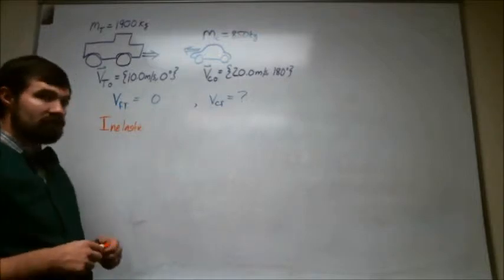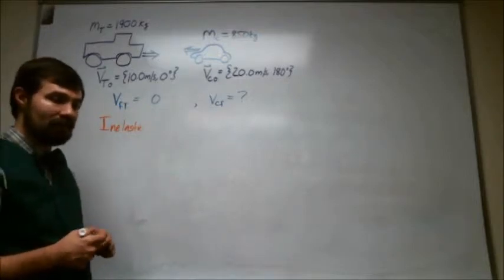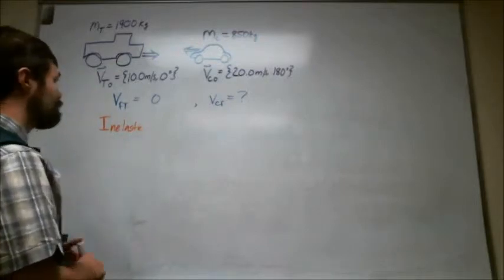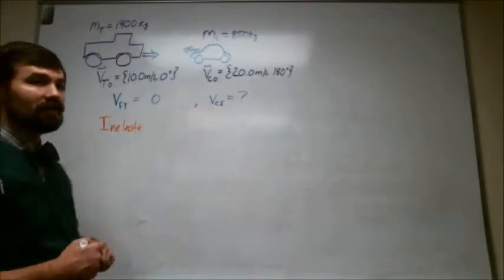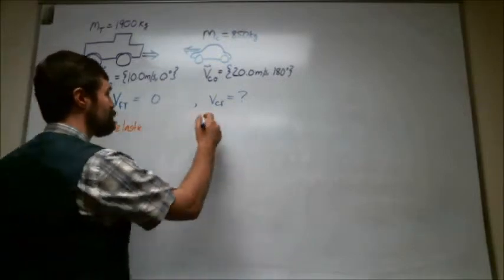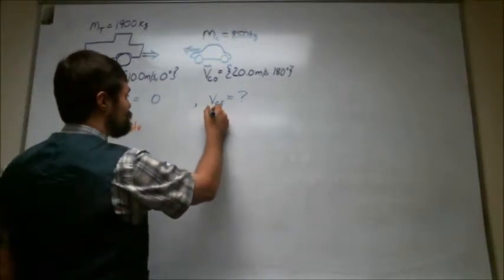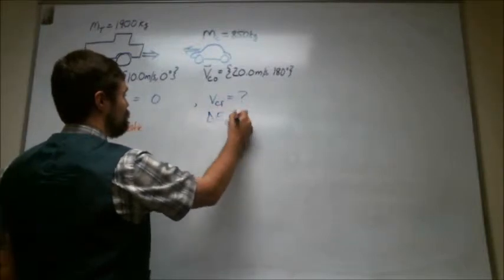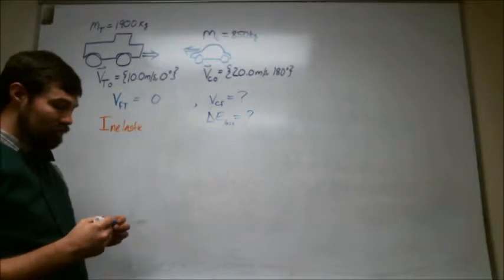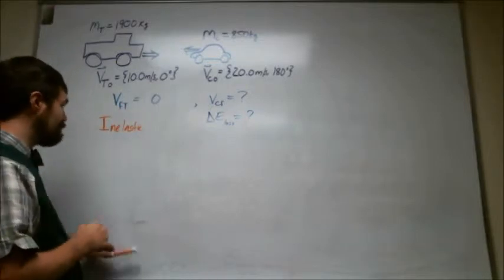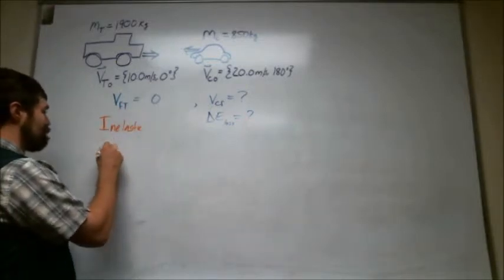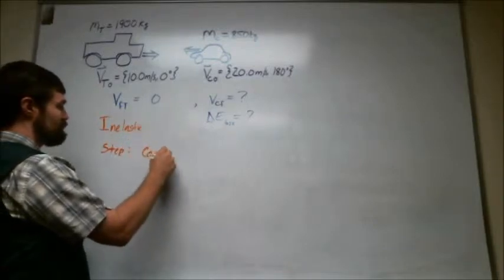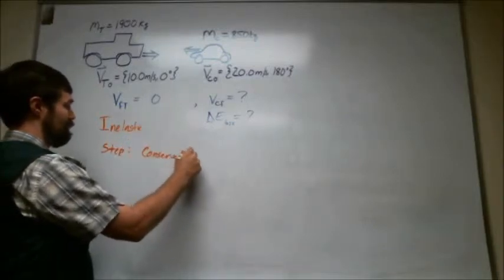So to solve this problem we basically can go in two steps. Step one would be to figure out what is the final speed of the car. Step two would be to figure out what is the lost energy going to be equal to. And so for step one, we're going to use conservation of momentum.